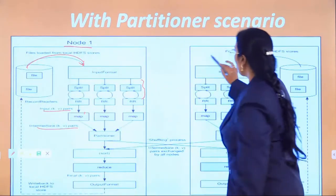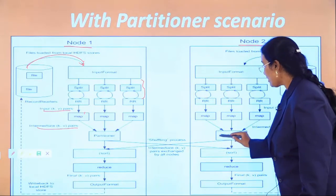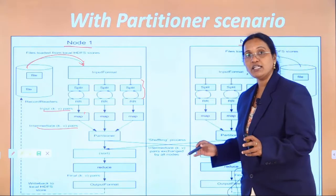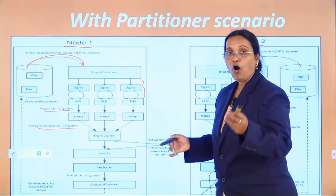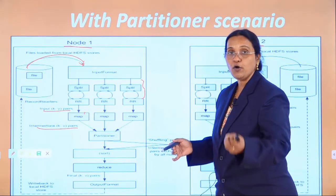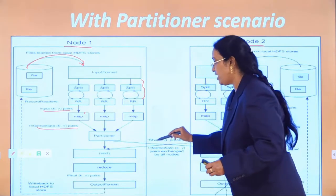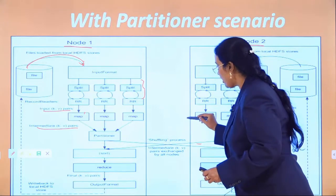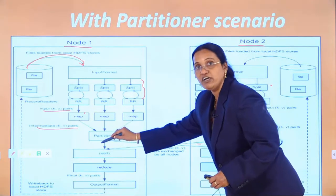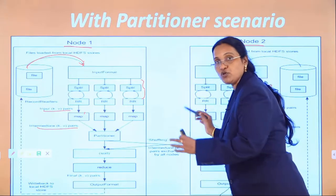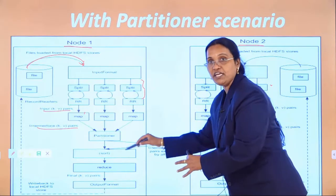The same operation continues in node 2 as well. All 'data' words come into the data partition, and all 'Hadoop' words come into another partition. Here, the shuffling process is done — if a 'data' word is in node 2, it will come into that partition; if any 'Hadoop' word is there, it will come to that partition. Whatever similar words are there, they are shuffled between the nodes.